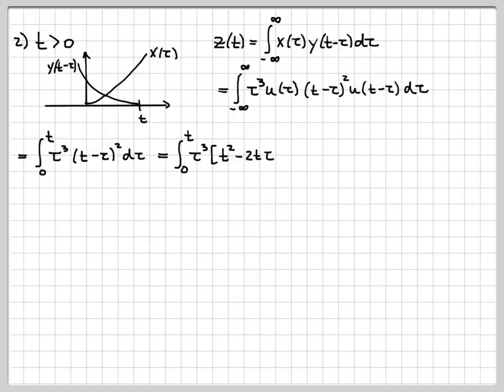I get t squared minus 2t tau plus tau squared. And this is an integral with respect to d tau. If I keep multiplying things out, that turns into tau cubed t squared minus 2 tau to the fourth t plus tau to the fifth. And this is an integral, again, with respect to tau. So really, I'm just doing simple polynomial integration at this point.